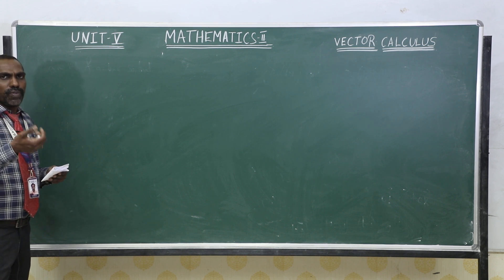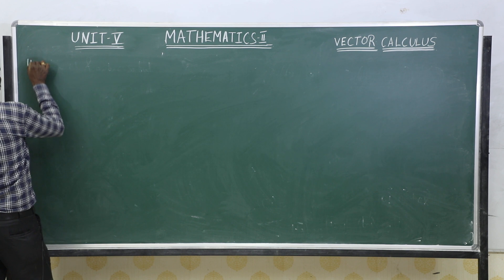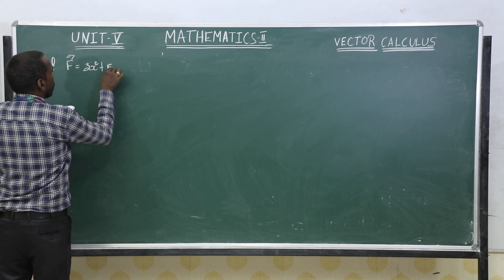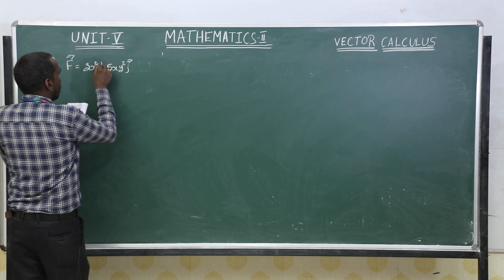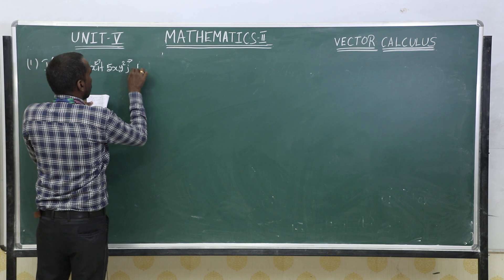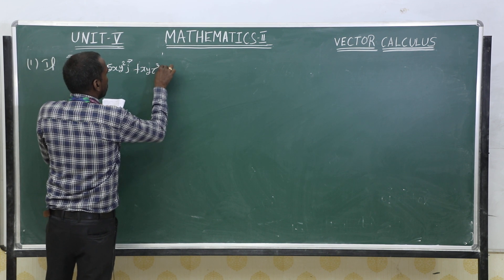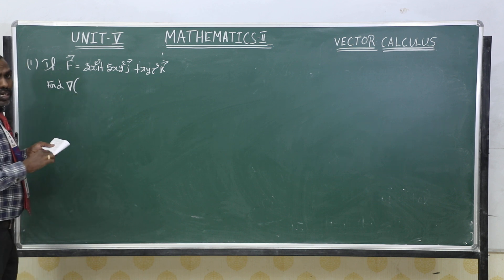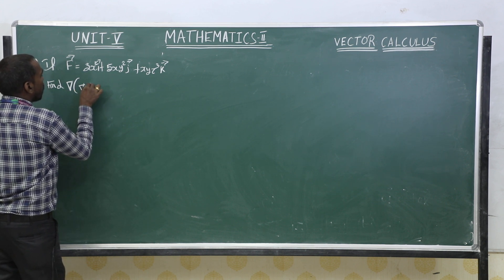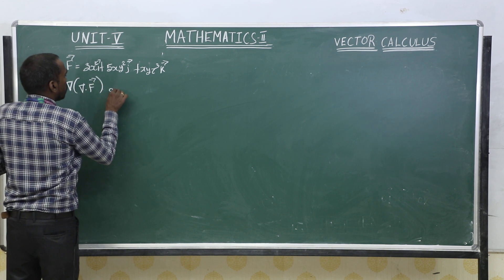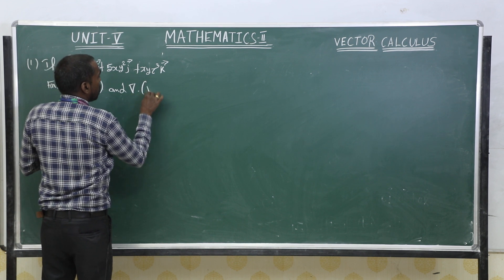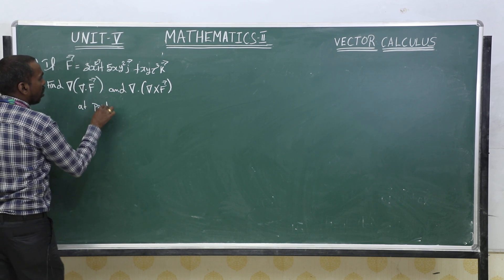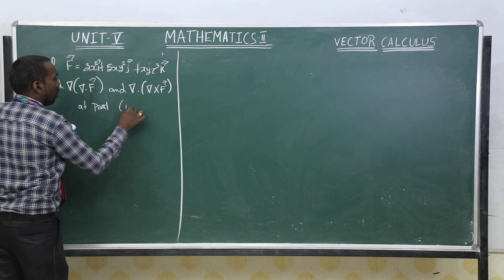Dear friends, now you can do one more problem. Here, if F vector equals 3x² i vector plus 5xy² j vector plus xyz³ k vector, this is the given F vector. We are asked to find: first, delta of del dot F vector, and second, delta dot del cross F vector at the point 1, 2, 3.